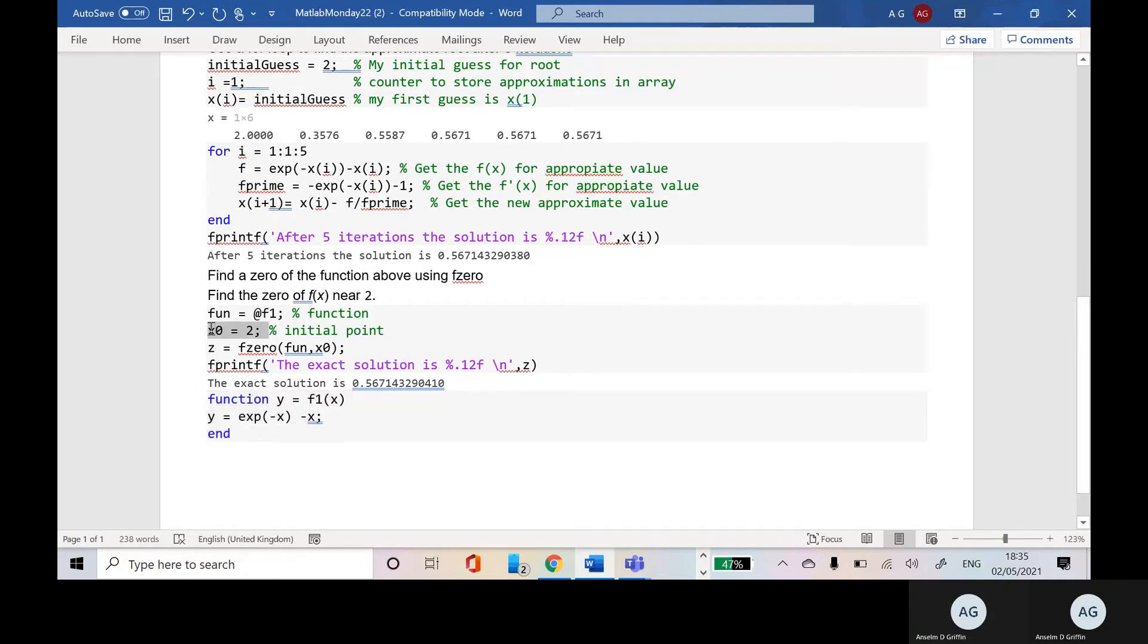There's the anonymous function and y, the function as above is e to the minus x minus x. My initial guess is 2, z would be the answer, f0 the function, here's the anonymous function there, e to the minus x minus x, but the initial value is 2.